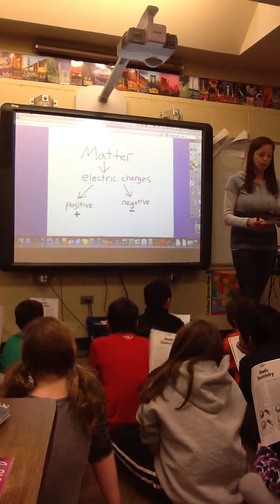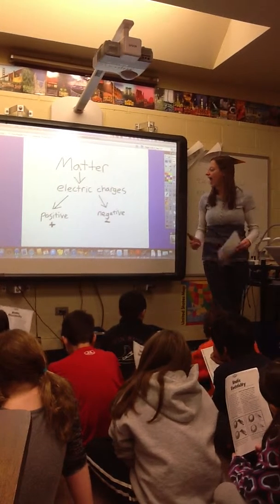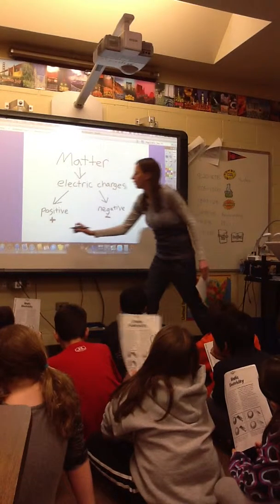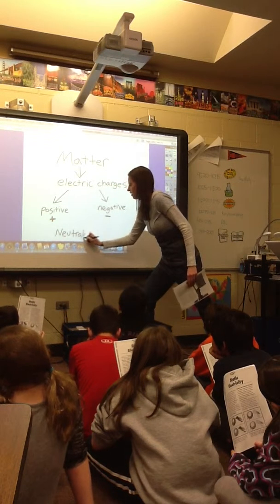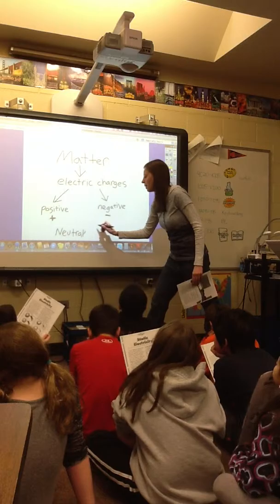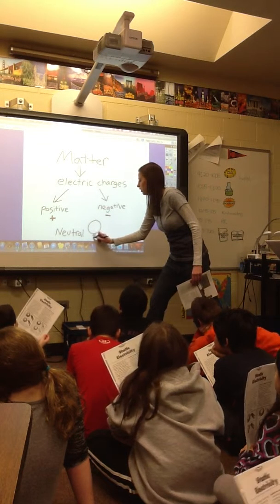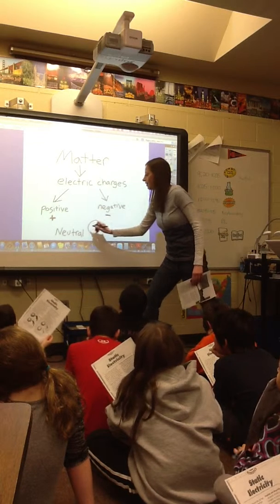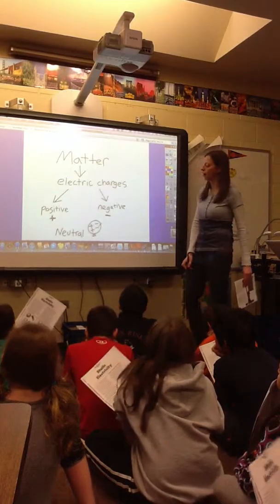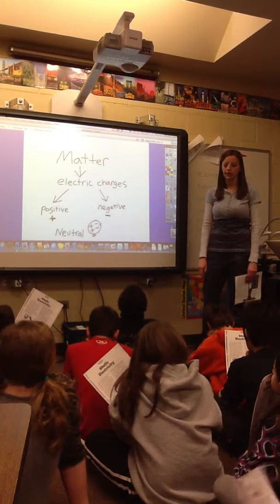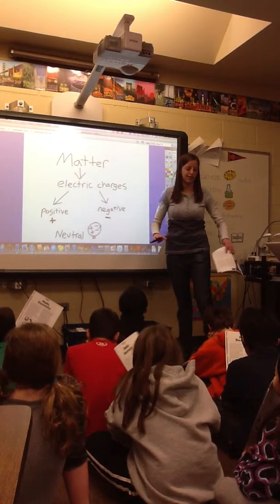A neutral object has the same number of positive charges as negative. So if something is neutral, say I'm going to draw a balloon that is neutral, it means that the number of positive charges and negative charges are equal. It's not positive and it's not negative. It's nothing. It's neutral.